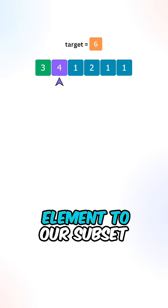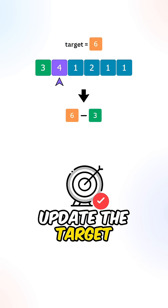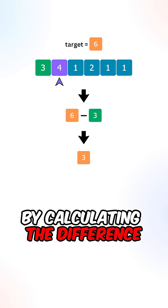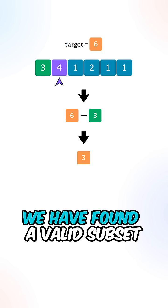Now after adding the element to our subset, we will need to update the target by calculating the difference. If target ever reaches zero, we have found a valid subset.